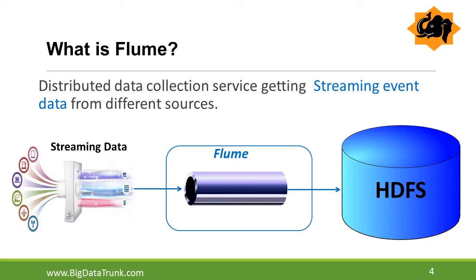Flume is a distributed data collection service for getting streaming event data from different sources. Examples of streaming data include web logs, GPS tracking data, social media updates, and digital sensor-generated data.